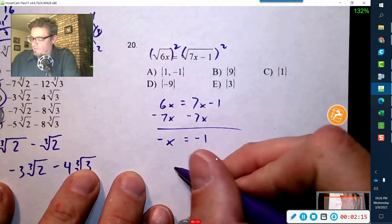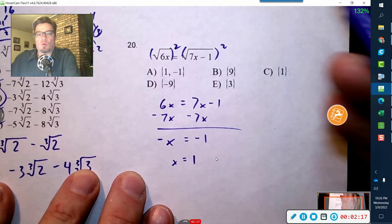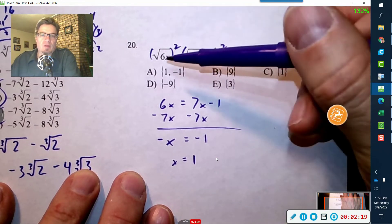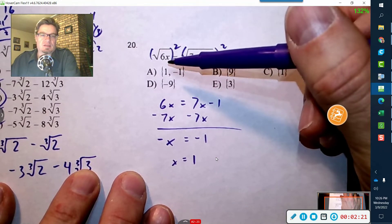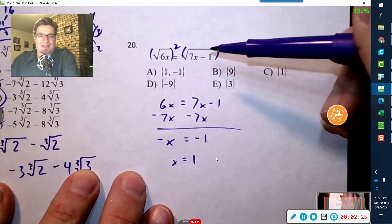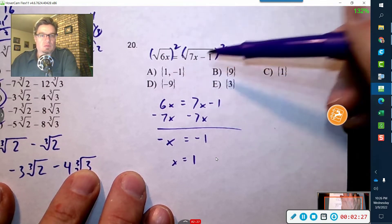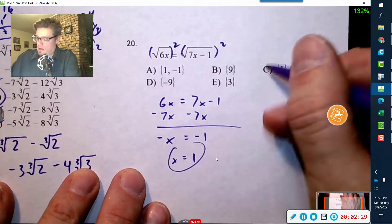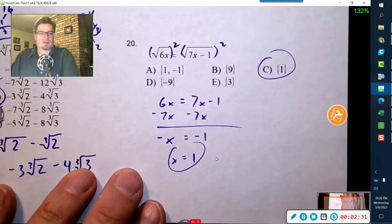So it looks like our final answer is positive one, but is one going to be a problem? Six times one is positive six. This will be seven times one is seven, seven minus one is positive six. So of course radical six equals radical six, so this has a good final answer.